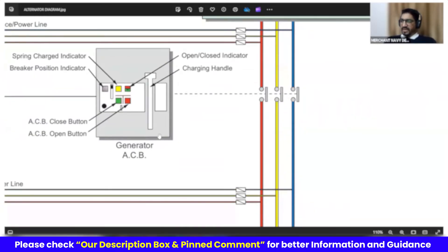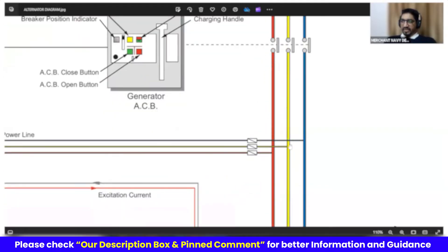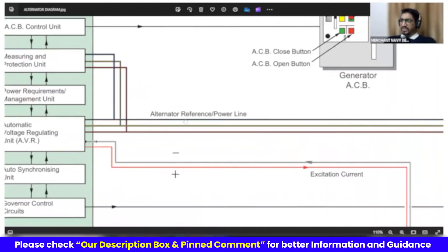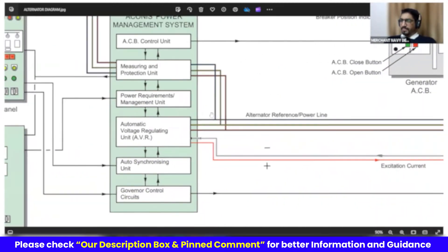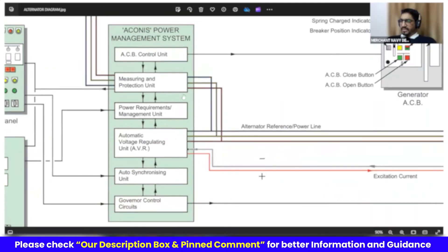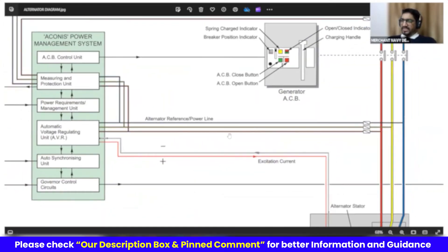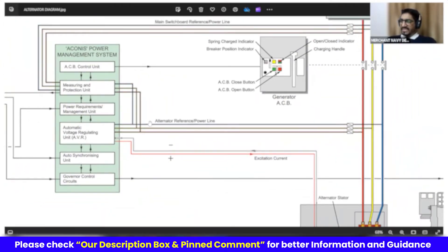Before the ACB, air circuit breaker, which is looking like this, there is a tapping given. This tapping, RYB, is going to this part here. This part is actually inside the MSB only, main switchboard. What is this power for? This is just to read. This is simply some kind of a sensing mechanism. You are sensing how much voltage is being produced. It's like a sensor, voltage sensor.